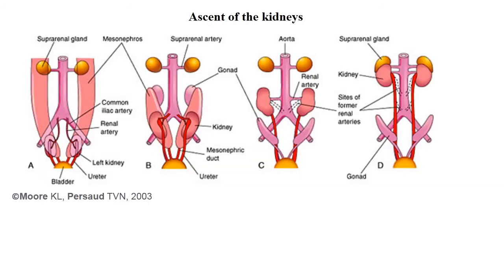Remember that the kidney changes its position. At early stages of development, the kidney is located in the pelvis, then it rises and is finally located in the abdomen, covered by the suprarenal gland.